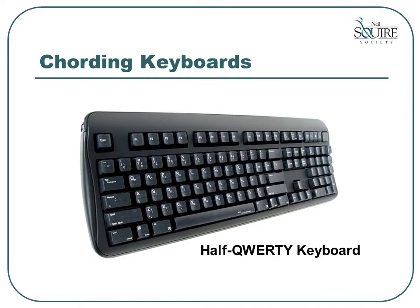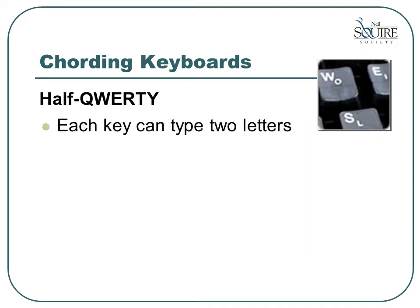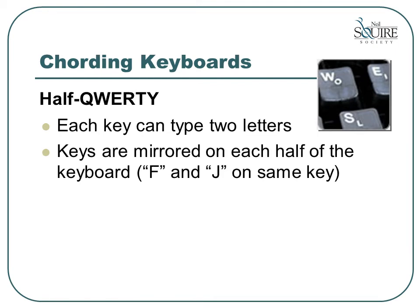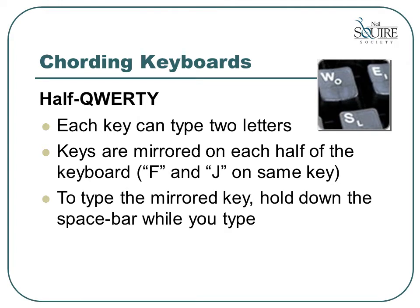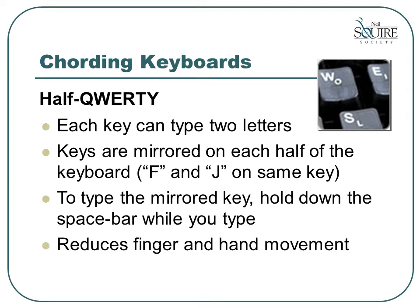Another cording keyboard designed for one-handed typing is the half QWERTY keyboard. This keyboard looks like a standard keyboard except that every key has two letters on it — the keys are mirrored on each half of the keyboard. For example, the letters F and J are on the same key. To type the mirrored key, you need to hold down the space bar while you type. This keyboard is recommended for one-handed typists because it reduces the finger and hand movement required to type. For a trained touch typist, learning to use this keyboard is usually very quick, as the brain will automatically map all of the keystrokes from a specific finger on one hand to the same finger on the other hand.